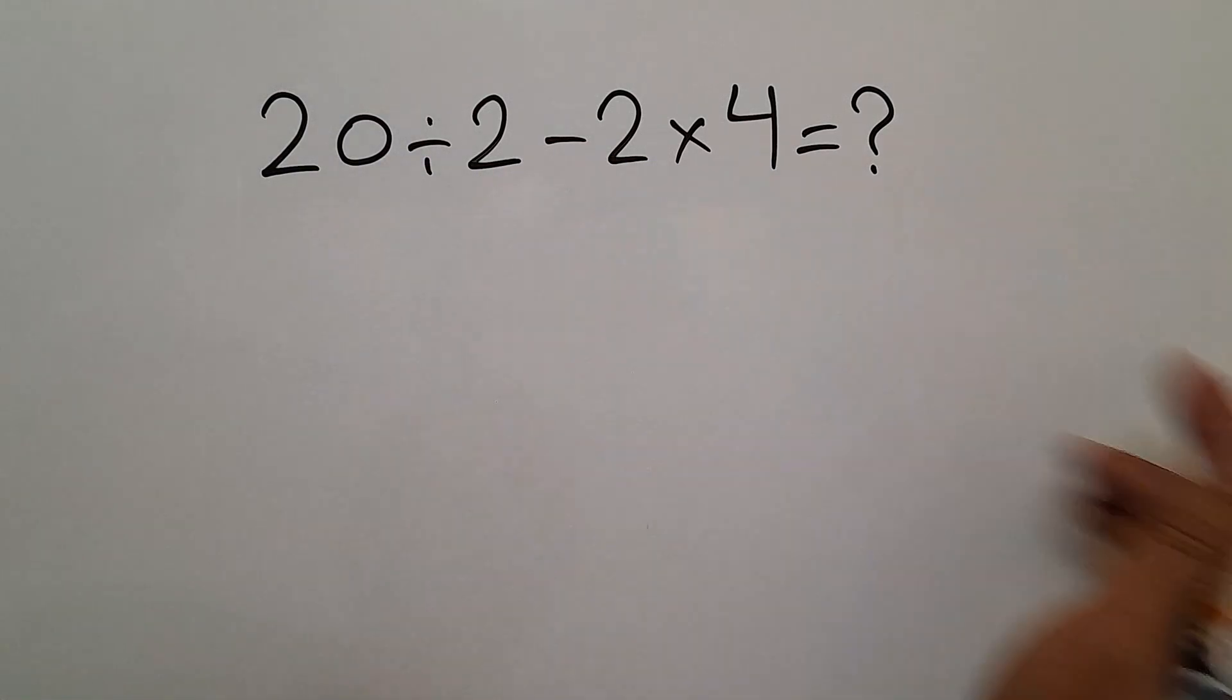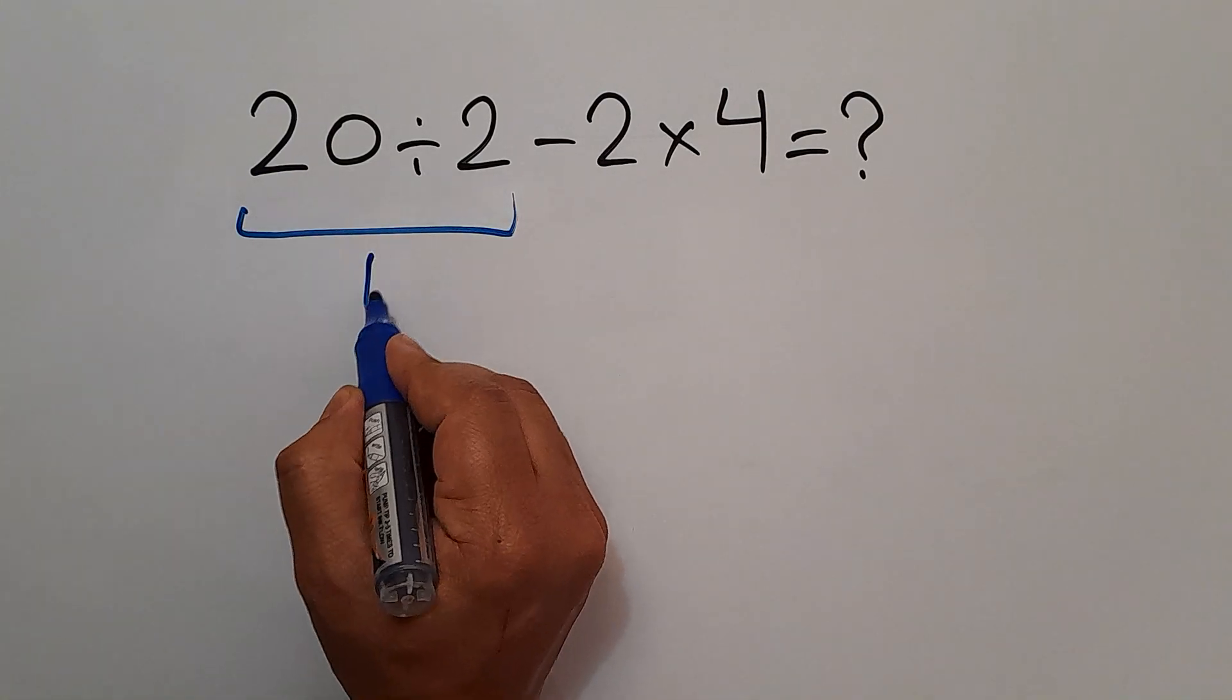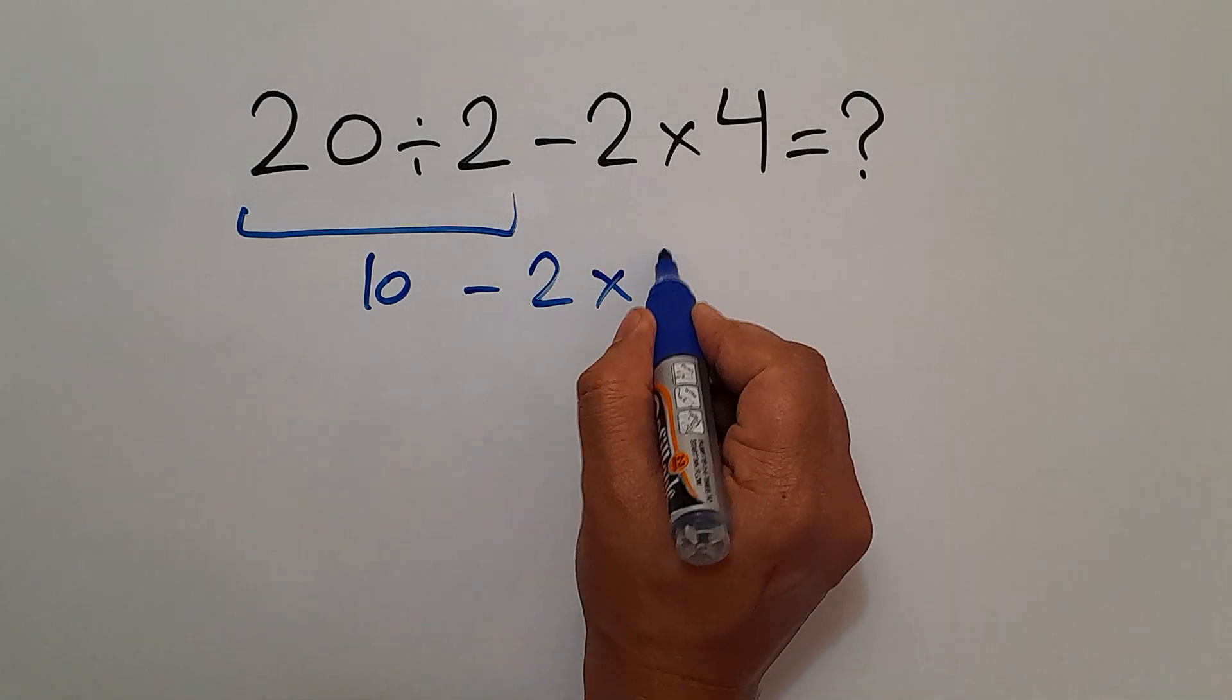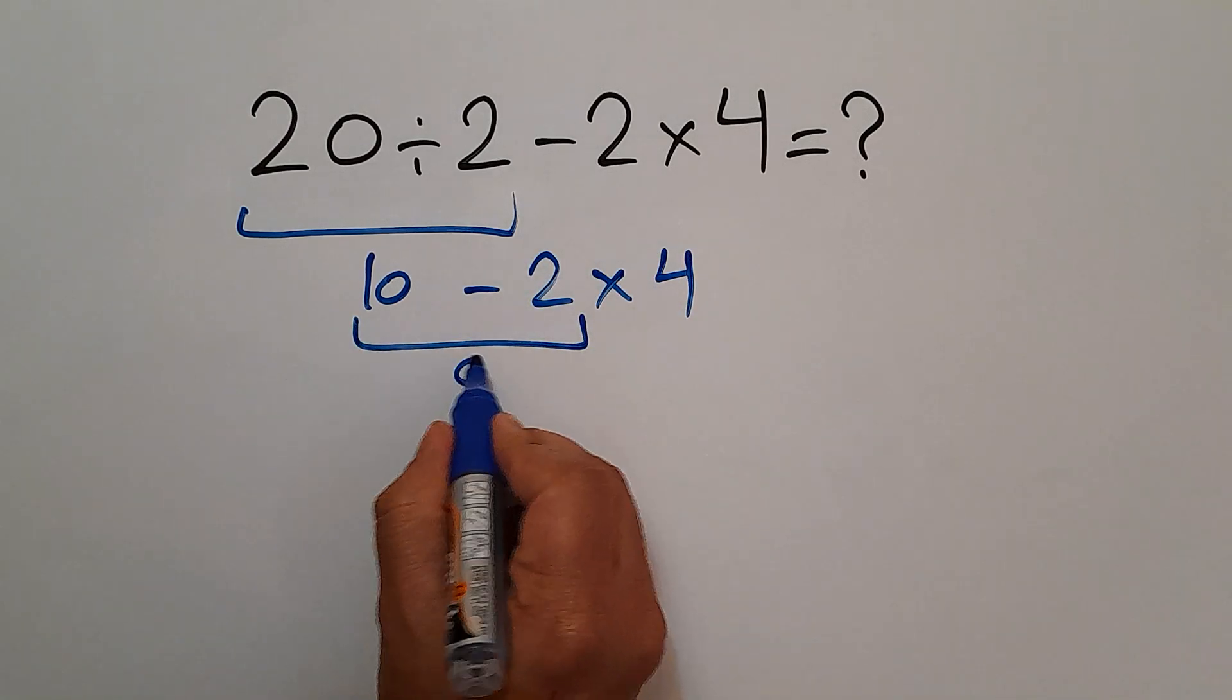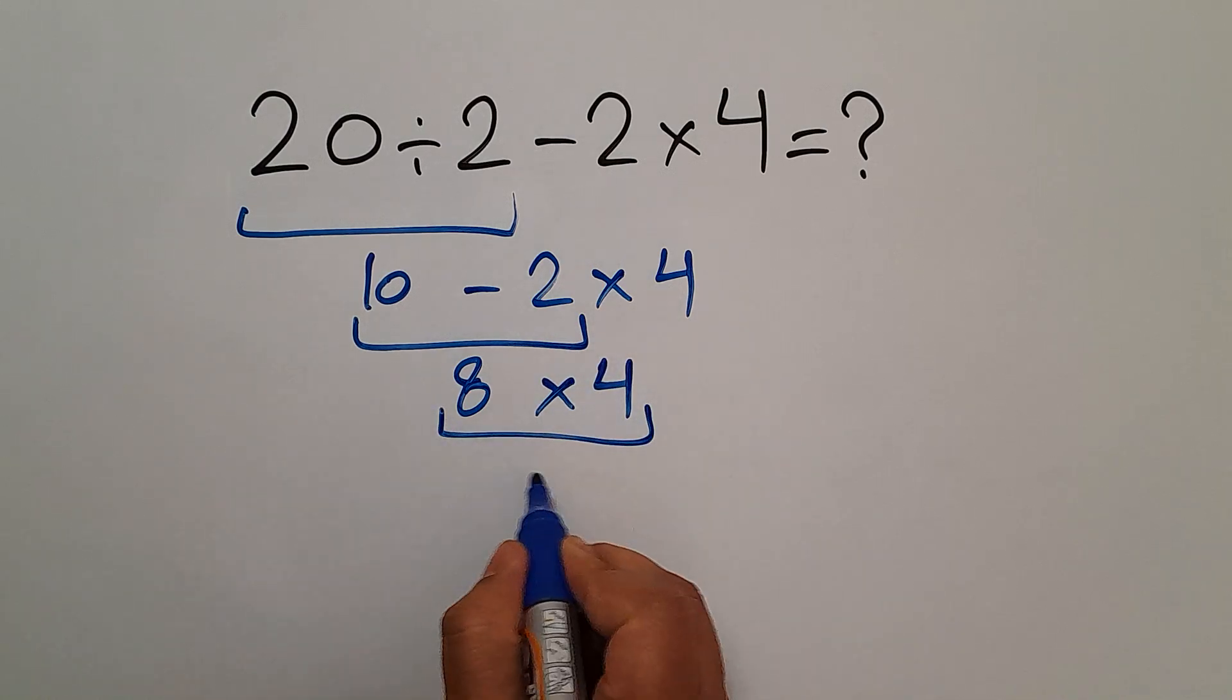Are you ready to solve? Let's go ahead and get started. 20 divided by 2 gives us 10. Then 10 minus 2 times 4. 10 minus 2 equals 8 and 8 times 4, which equals 32.